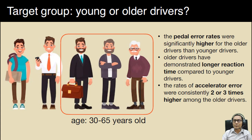Talking about the target group, or who are the participants involved in the pedal error study, we found that most of the researchers are focusing on the older drivers. The participants' age range is between 30 to 65 years old, or even older. From several studies, it is found that the pedal error rates were significantly higher for the older drivers than younger drivers due to the longer reaction time by the elderly. Besides that, the rates of accelerator error were consistently two or three times higher among the older drivers.